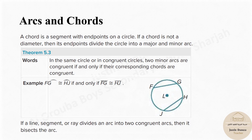Here we have a set of theorems — four theorems which you must remember. The first theorem states that if arc FG is congruent to arc JH, and these chords have cut those arcs such that both arcs are equal, then the two chords will also be equal. Conversely, if the two chords are congruent, then the arcs are equal.